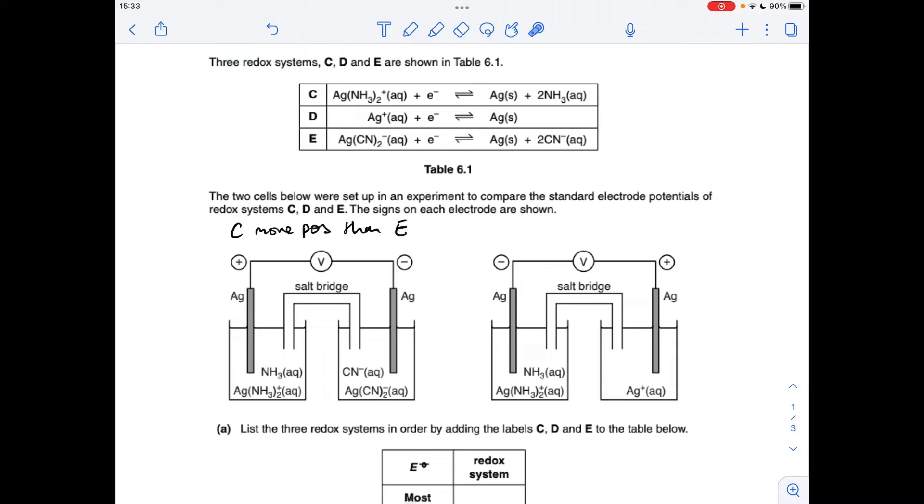Then if we move on to the right-hand side, we've got system C again, and we've got system D. You'll notice the polarity's changed, so this one now is the most positive one.